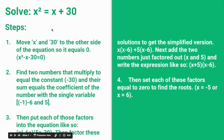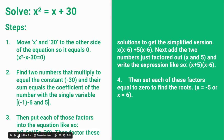The first step is to move x and 30 over to the other side so that the equation equals 0. When you do this you will get x squared minus x minus 30 equals 0.